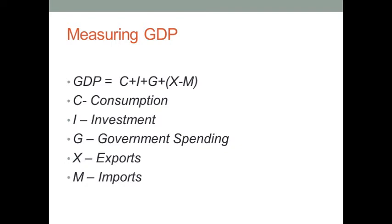The problem is consumption does not consider how we buy products — many Americans buy products on credit but GDP does not account for that. Investment is the money invested by a business to buy new assets; it does not consider the amount saved by an individual. Government spending — the more the government spends, the better it is for the economy, and that's where welfare comes in. America's welfare is not so great but their consumption and exports are at an all-time high, and unlike India they do not depend heavily on imports. India needs to import a considerable amount of oil to keep vehicles running.